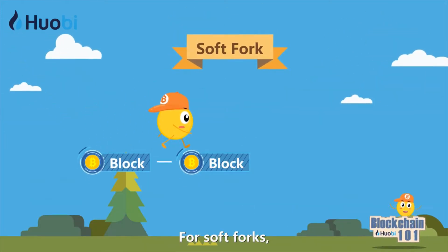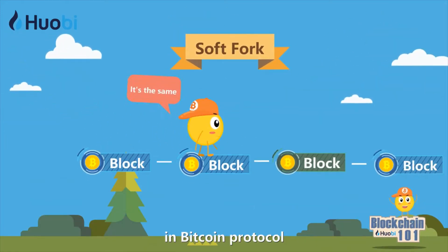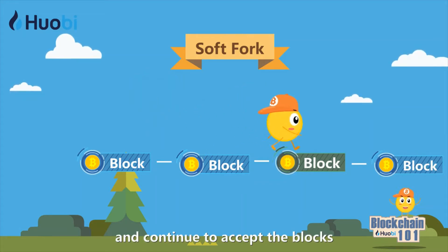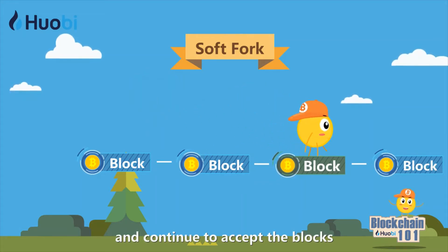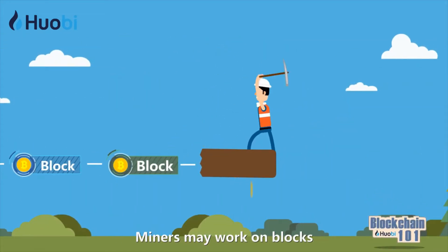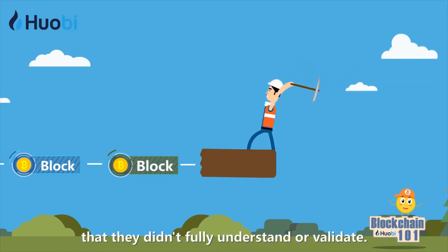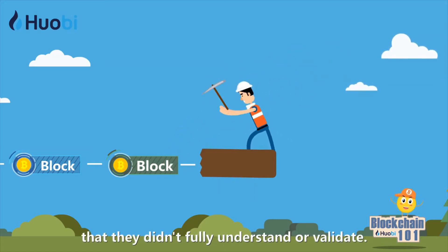For soft forks, old nodes won't detect the change in Bitcoin protocol and continue to accept the blocks created by new nodes. Miners may work on blocks that they didn't fully understand or validate.